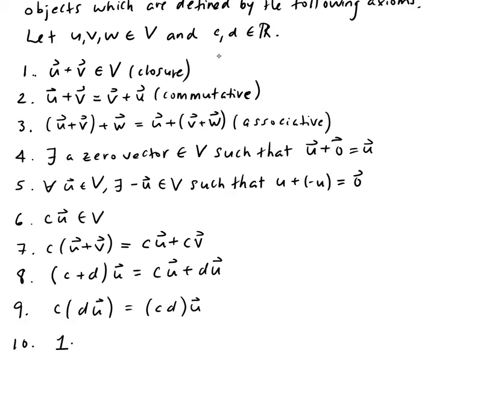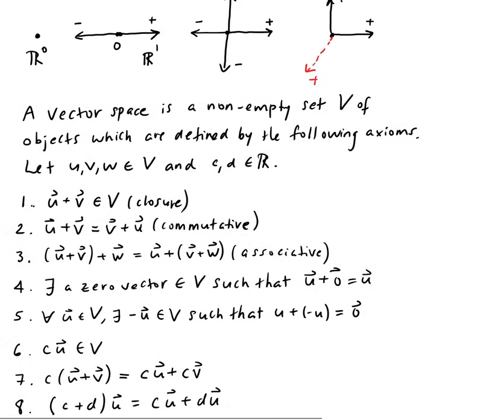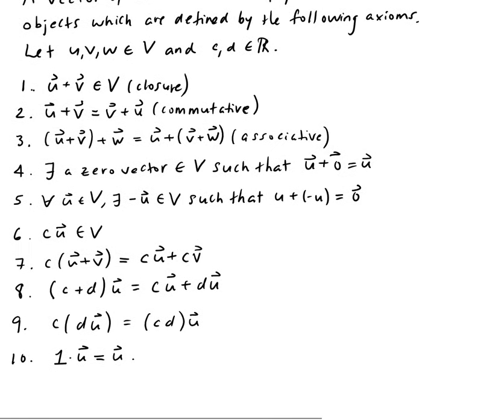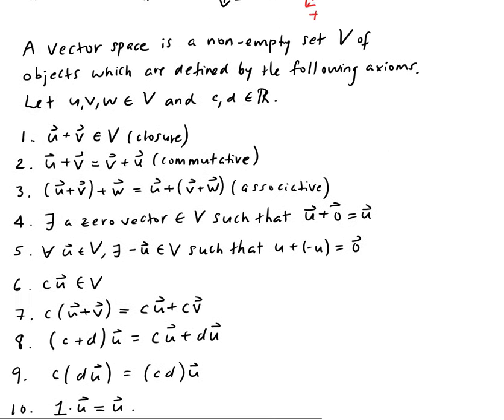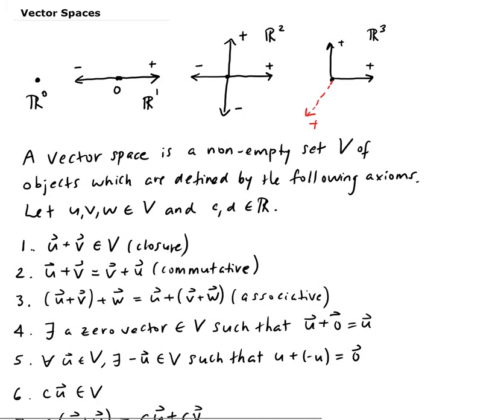Tenth: you take one times any vector u and it's going to give you back u. It preserves the identity under the multiplication of one. Those are the ten axioms. All ten of these have to be satisfied for V to be a vector space.